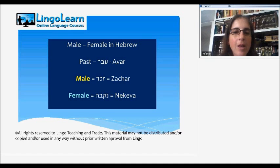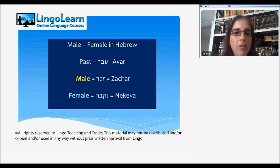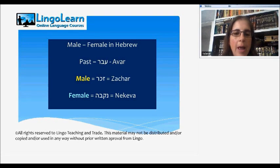Today, we will speak about male and female in Hebrew. We'll use the past tense. In Hebrew, past is called avar. Male is called zachar, and female is called nechiva. We'll use the yellow color in the presentation to represent the male, and the blue color in the presentation to represent the female.